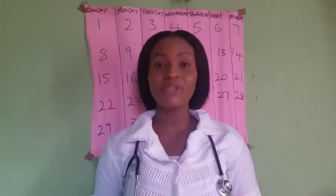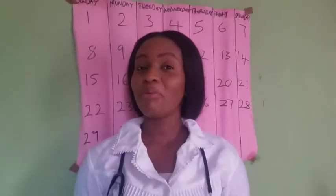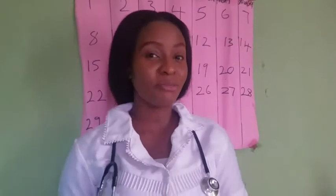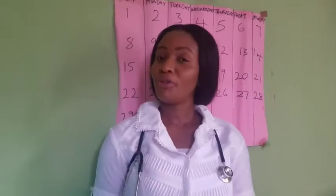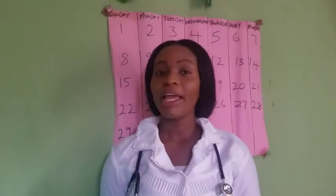Your menstrual cycle begins on the first day of your menstrual period and continues to the first day of your next menstrual period. Fertile days are those days when a woman will likely get pregnant if she has unprotected sexual intercourse. Always remember that sperm survives up to five days in a woman's body after unprotected intercourse.